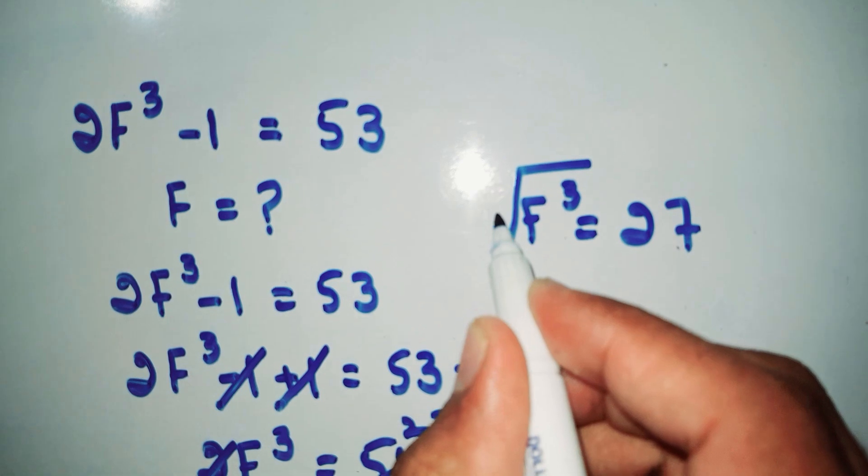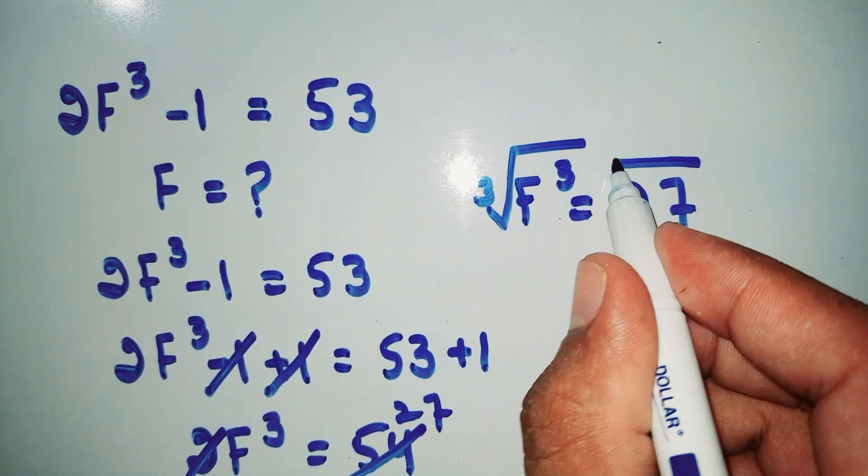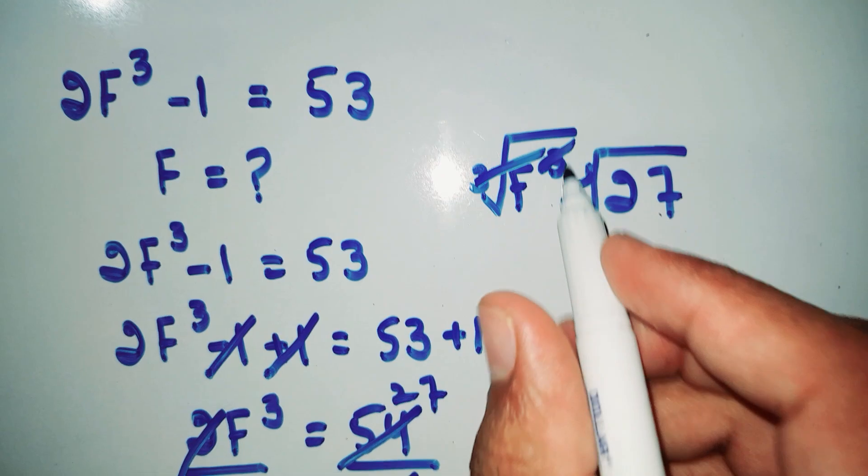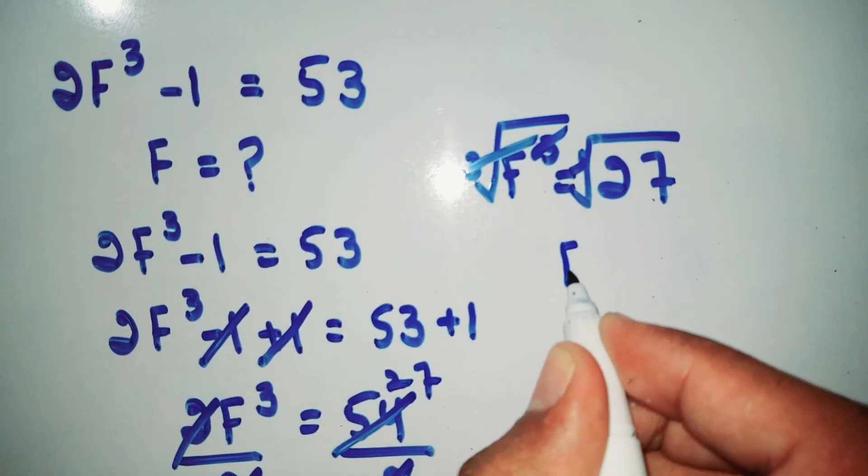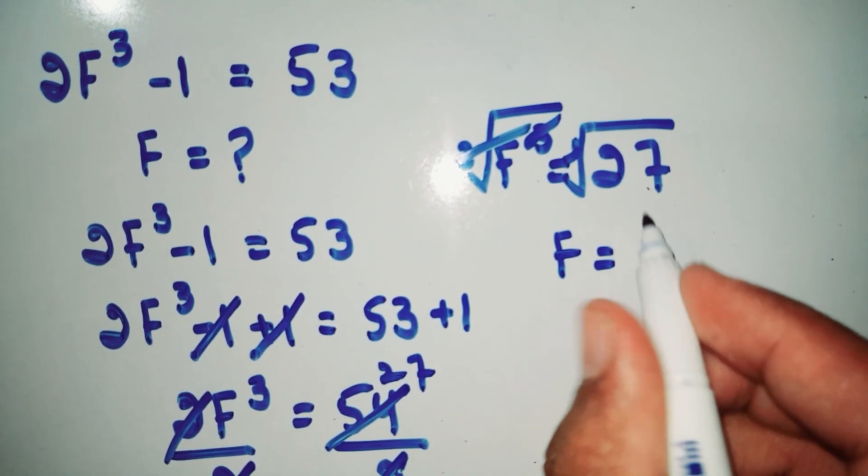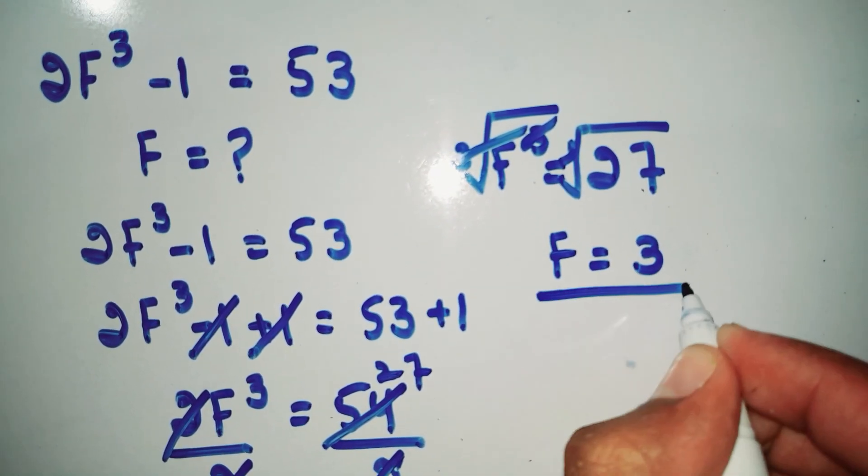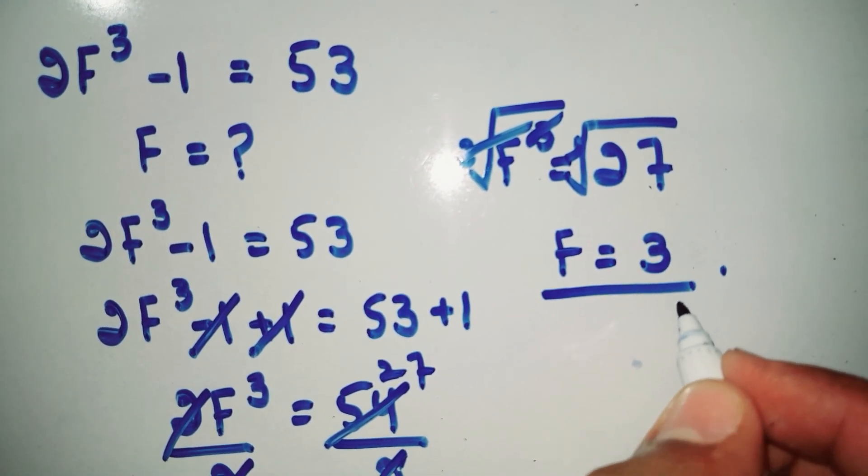Cube root this side and cube root this side. So cube root and cube cancel, so F is equal to cube root of 27, which is equal to 3. So F = 3. This is our answer.